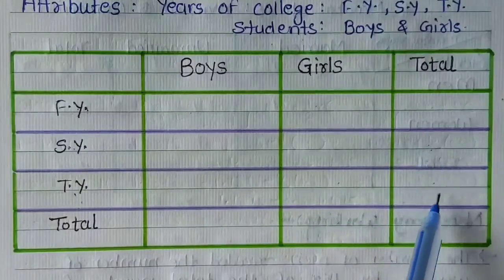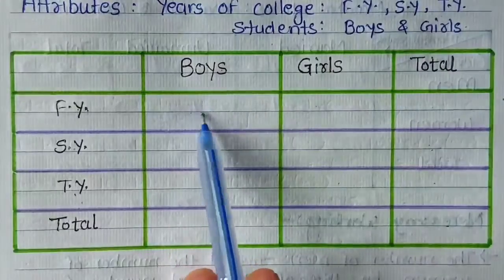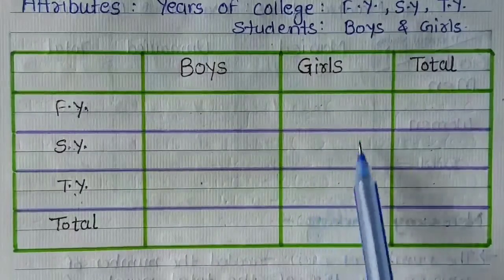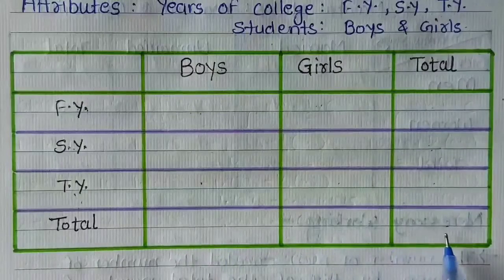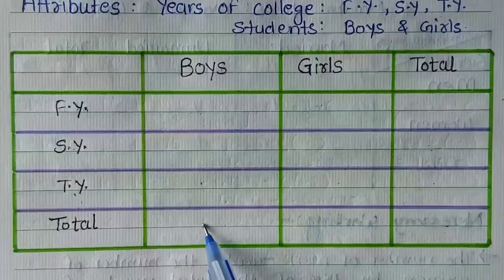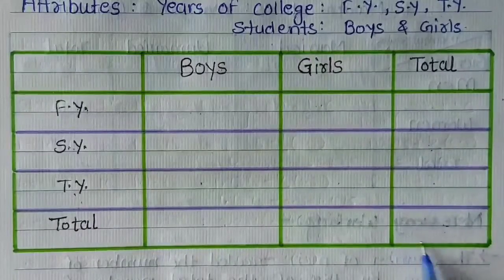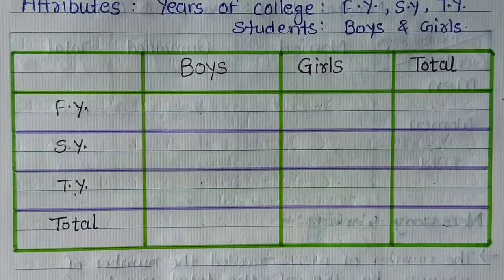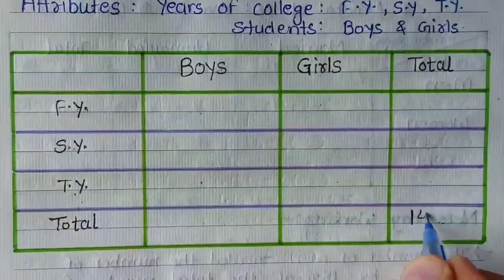FY, SY और TY के totals यानि total students. Boys of FY, boys of SY और boys of TY तीनों का total यानि total boys. And FY की girls, SY की girls और TY की girls तीनों का total यानि total girls. Total boys और total girls इन दोनों का total यानि total number of students. तो आप horizontally करें या vertically करें, यह total same रहेगा. अब हम question read करते हैं: there were 1400 students studying in a commerce college. तो total 1400 students है, तो वो हम यहाँ पर 1400 लिख देंगे.